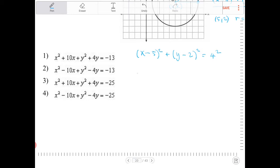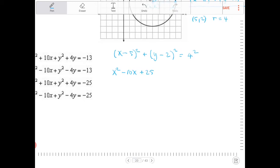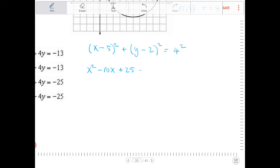So I'm going to expand (x - 5)². If I foil that out, I will get x² - 10x + 25. I will expand out (y - 2)². So plus y² - 4y + 4 is equal to 16.